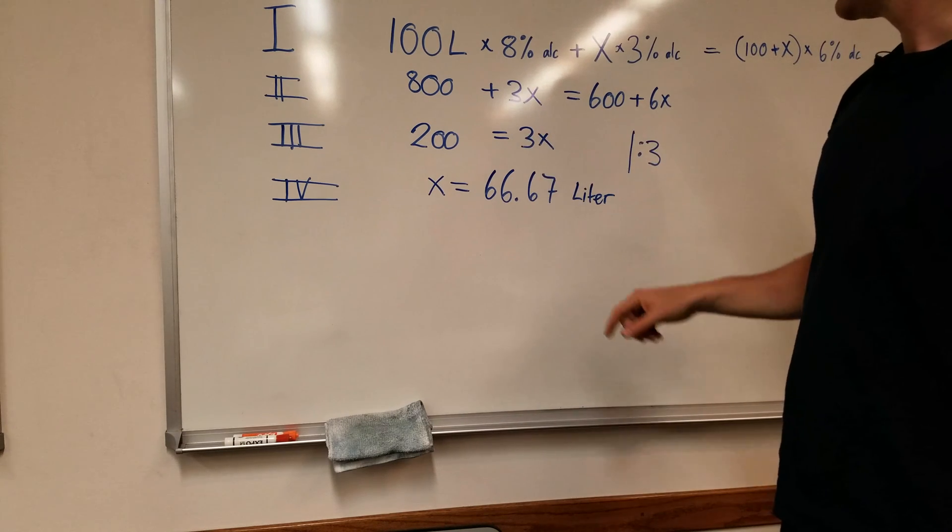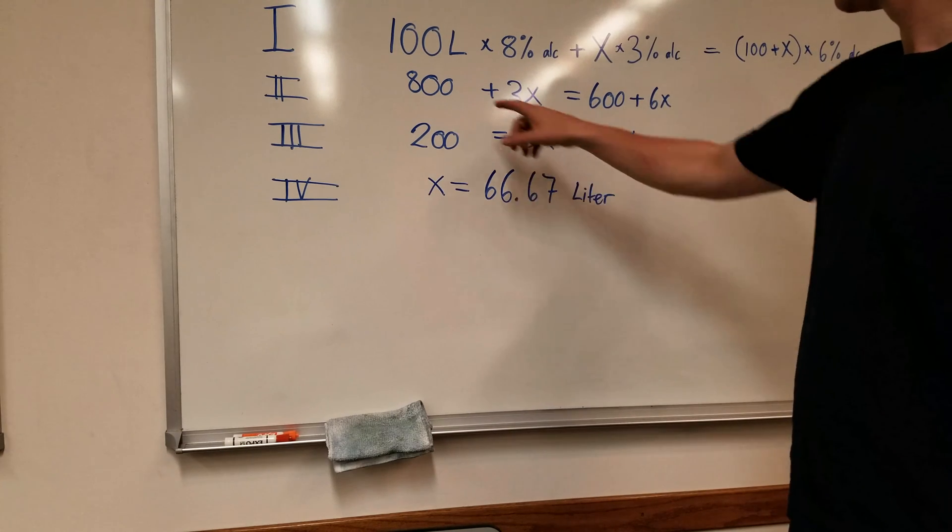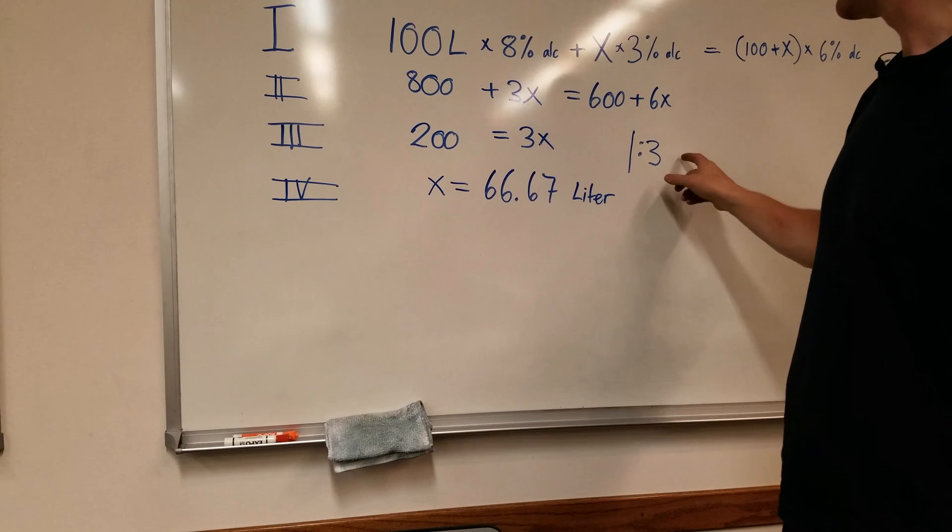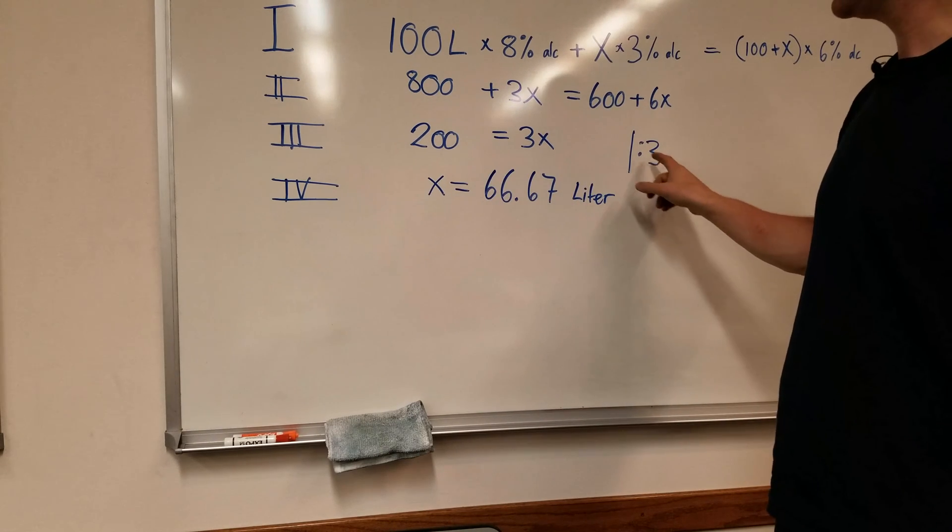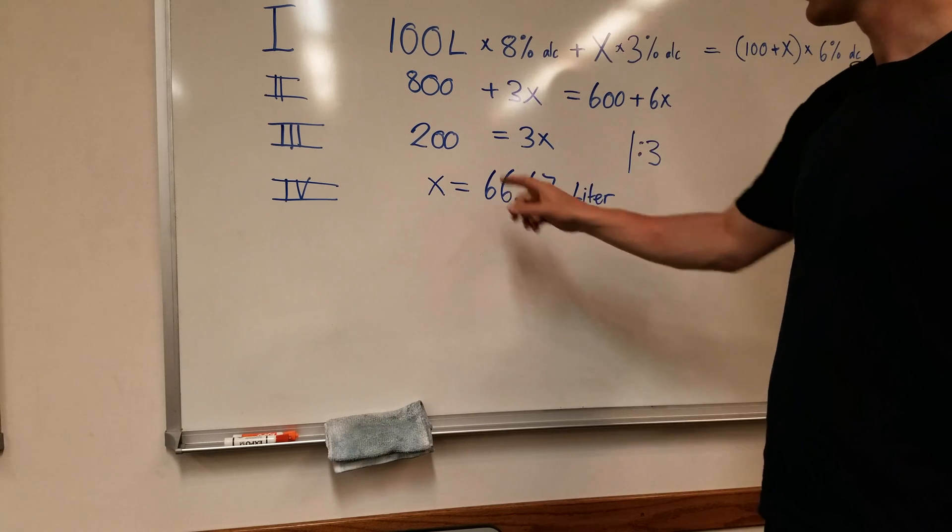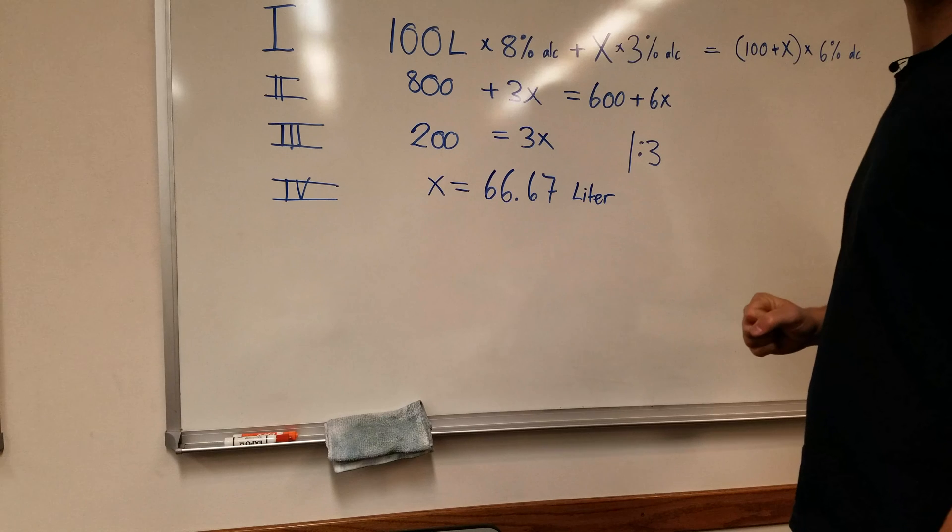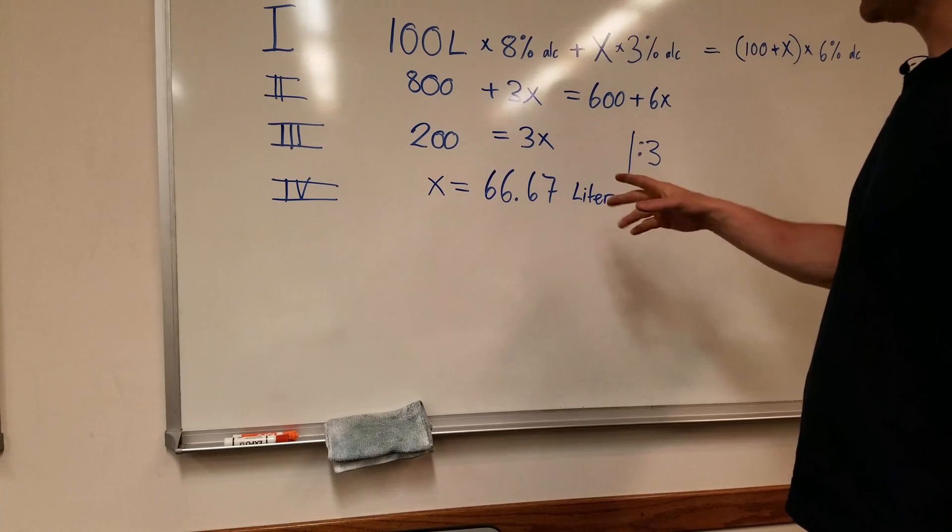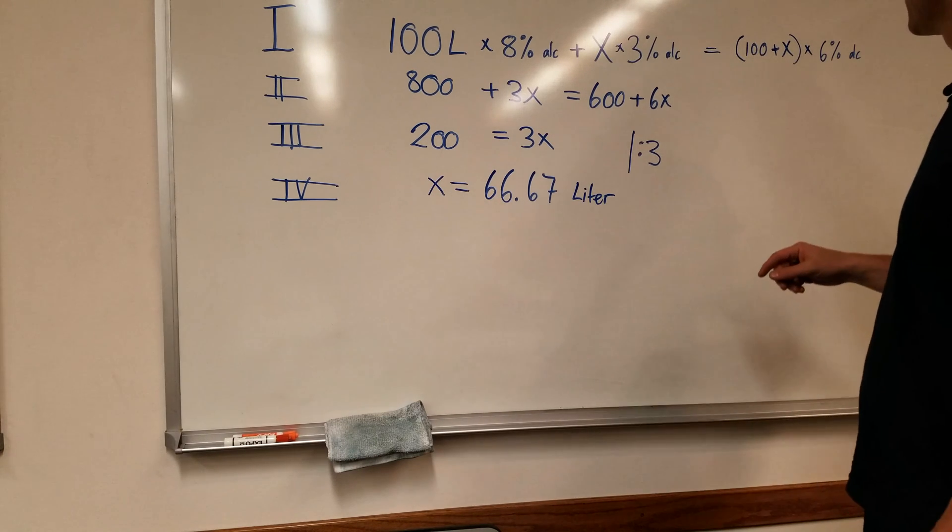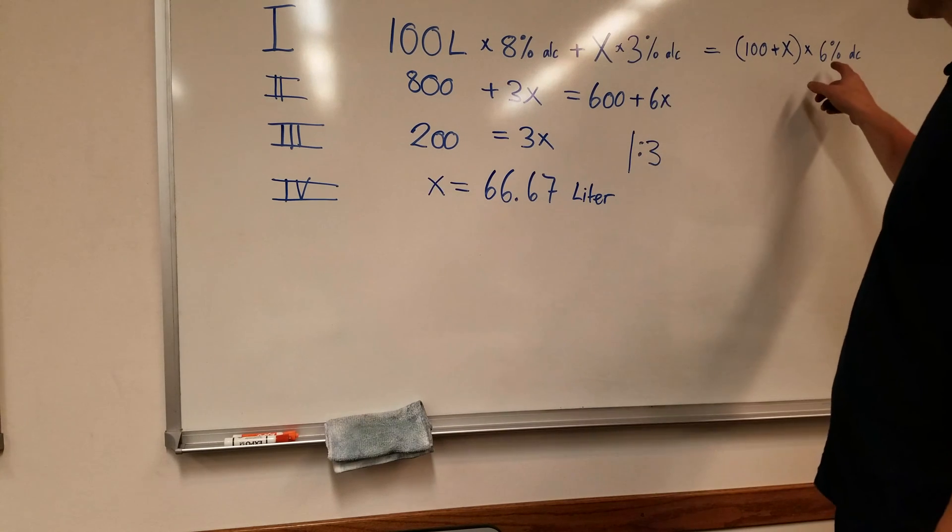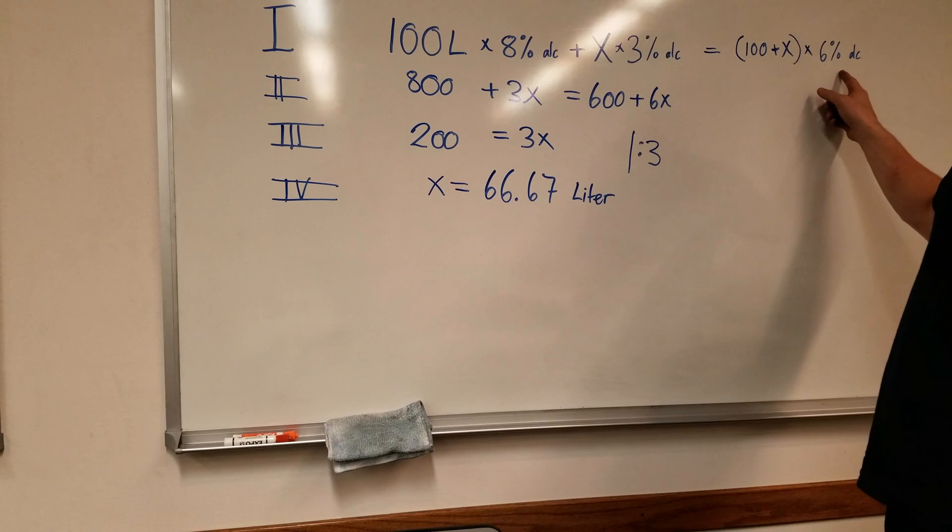6 minus 3x is 3x, 800 minus 600 is 200, divide by 3 to solve for x, x equals 66.67 liters. So in this case, we needed to add about 66 liters of 3% alcohol if we wanted to dilute it to a total of 6%.